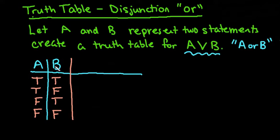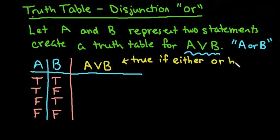So once you've established the first part, which is always the most important, you always want to set it up the same way, then you're going to do your A or B column. So in order for this to be true, it's true if either statement is true or both statements is true.